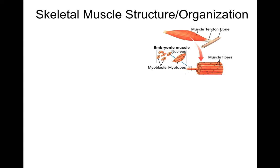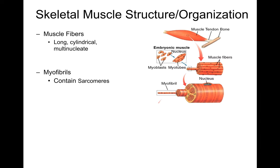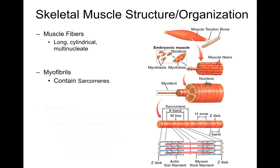There is a lot of ultrastructure and organization to skeletal muscles. If you look at a whole muscle, it has many hierarchical levels. The muscle is attached through a tendon to a bone, and it has an insertion and an origin, connecting two things that move. Muscle fibers are long, cylindrical, and multinucleate — really odd kinds of cells. The myofibrils inside a muscle fiber contain the sarcomeres, which are the contractile units and the actual functional unit of striated muscles.